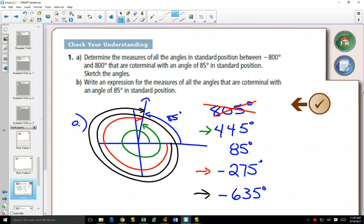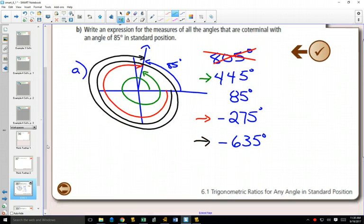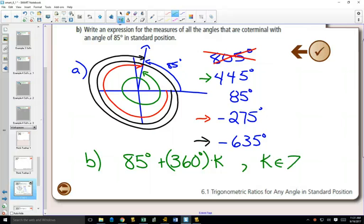Then in part B, it says write an expression for the measures of all the angles coterminal with 85°. The way that we do that is we start with the angle that we have, which is 85 degrees, and we add 360 degrees times k, where k is an integer.